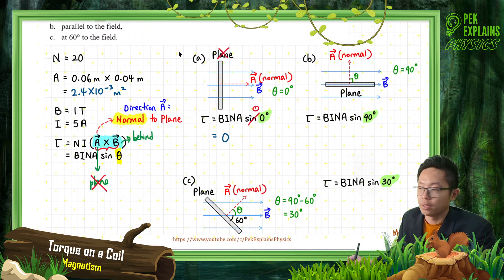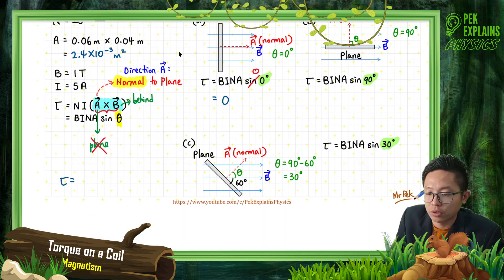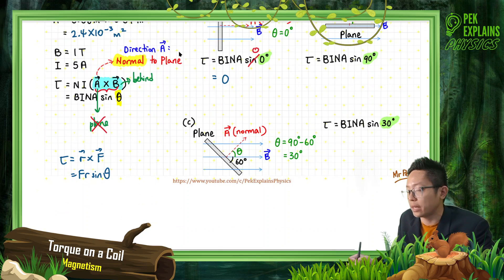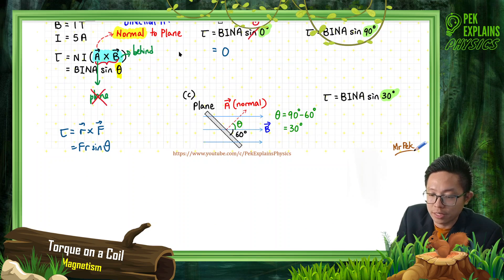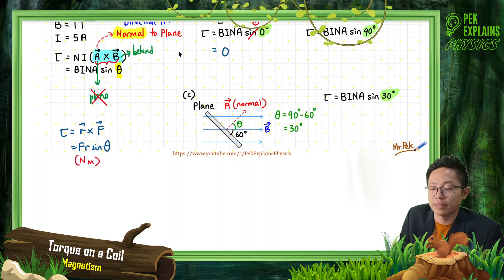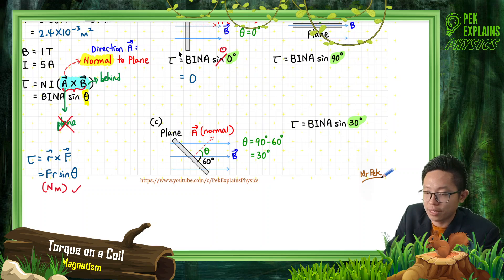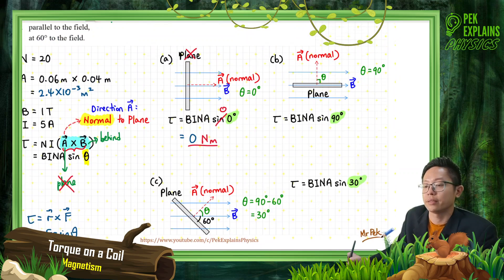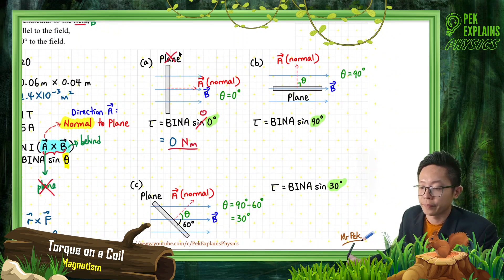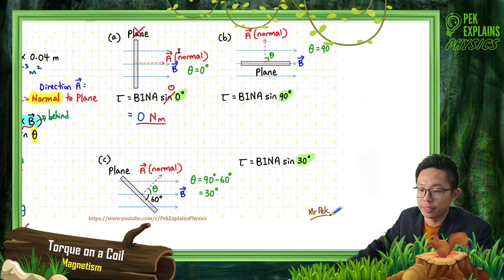The unit of torque comes from τ = r × F, which gives Newton meters. Since sin 0 = 0, the torque for question A is zero Newton meters. That's the answer for case A.